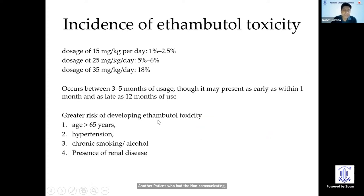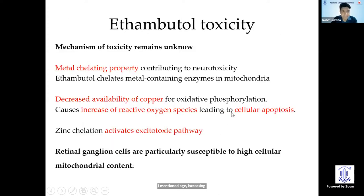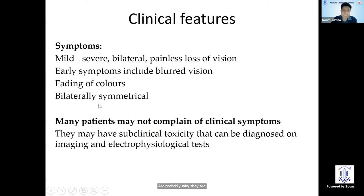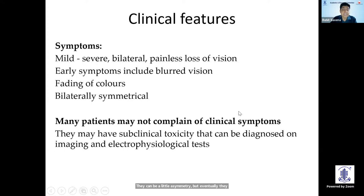Incidence is essentially dependent on dose and duration of use, and toxicity can present any time from one month onwards. Increasing age, hypertension, smoking, alcohol, and renal disease are major risk factors. The mechanism is believed to involve metal chelating properties, particularly decreasing copper and zinc, thereby affecting the oxidative pathway. Retinal ganglion cells, having high mitochondrial content, are the most affected. Patients present with moderate to severe bilateral painless vision loss — initially blurred with color desaturation — and may not complain until severe visual loss occurs, leading to missed or delayed diagnosis.